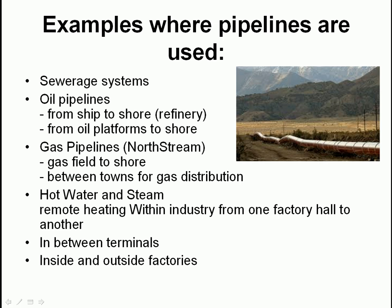We've got oil pipelines from ship to shore, to the refinery, and from oil platforms all the way to shore. We've got gas pipelines - Nord Stream, which is two gas pipelines in the Baltic Sea. It's politically a very sensitive issue at the moment. We've got gas pipelines between gas fields and shore, and between towns for gas distribution.